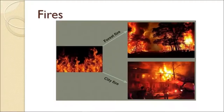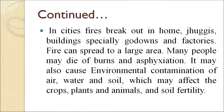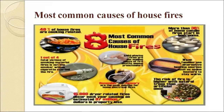The next man-made disaster is fire. Fire can be natural — that is forest fire — or city fire or domestic fire. Fires are events of burning and are often destructive, taking a toll of life and property. It is observed that more people die in a fire than in a cyclone, earthquake, flood and other natural disasters combined. Fires are a great threat to forests and wildlife because they spread speedily and cause tremendous damage in a short time. In cities, fire breaks out in homes, jhuggis, buildings, especially godowns and factories. Fire can spread to a large area, causing deaths and environmental contamination of air, water and soil, affecting crops, plants, animals and soil fertility. During summer months, such fires result in casualties and enormous economic losses.